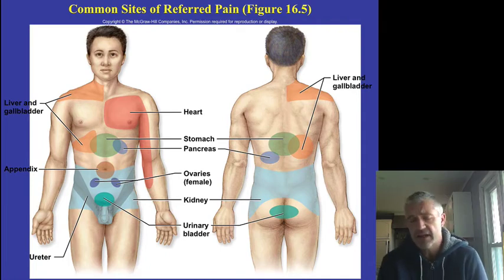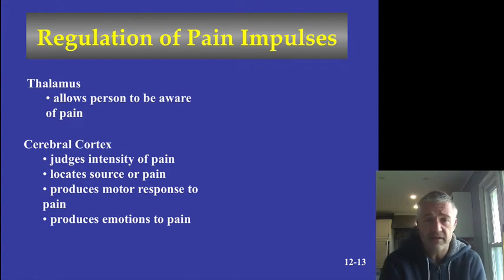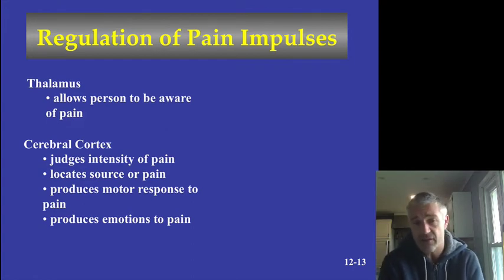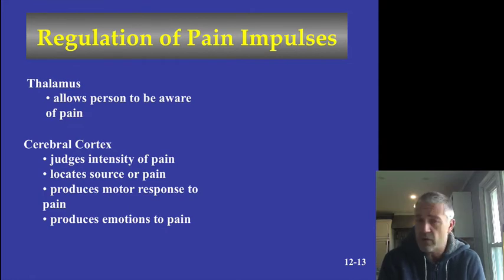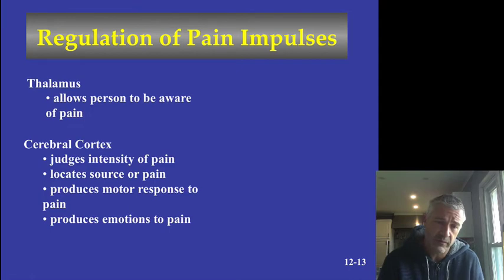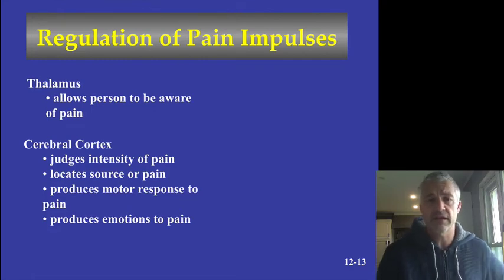You don't need to memorize all the sites of referred pain, but understand what it is. The pain signal goes up through the thalamus — the sorting and relay area — which then sends it to the cerebral cortex. The cortex determines what's happening with the pain, where it is, and what to do about it: whether to feel distressed, cry, or move away from the source.